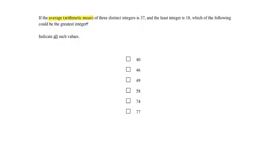If the average of three distinct integers is 37 and the least integer is 18, which of the following could be the greatest integer? Indicate all such values.